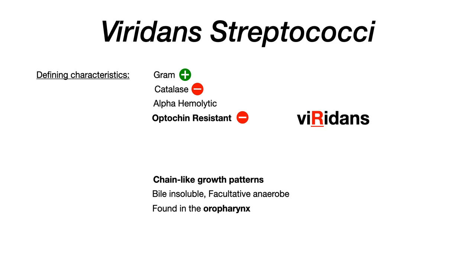The really high-yield thing to know about viridans strep is that it's found in the oropharynx. There's a slight difference between that and strep pneumoniae — strep pneumoniae was found in the nasopharynx, whereas viridans strep is in the oropharynx. And as you'll see, this has really high-yield implications for what kind of diseases it can cause, namely its association with dental procedures.